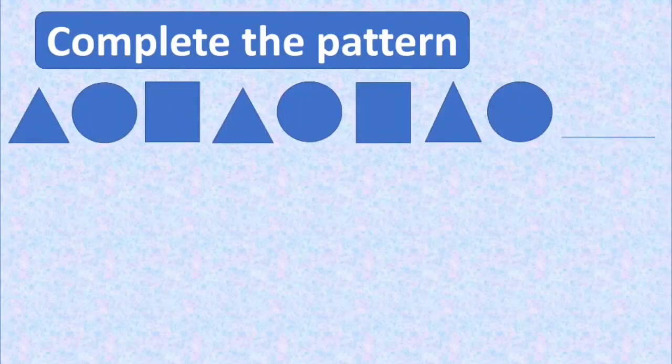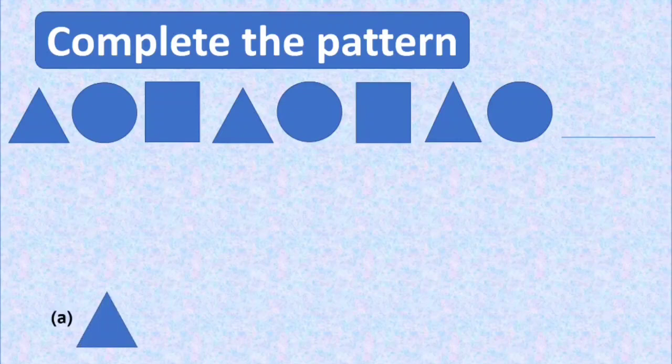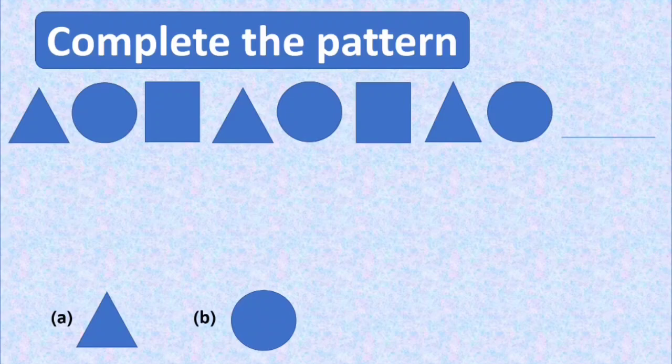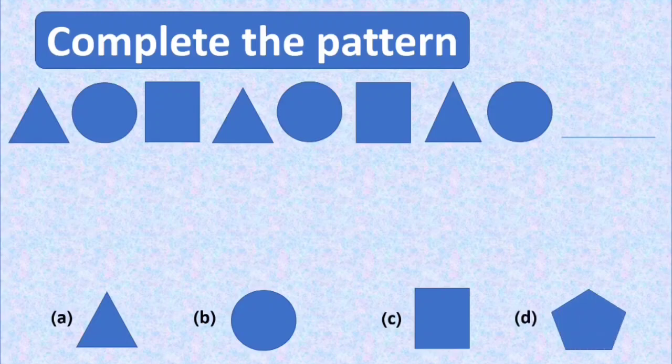Complete the pattern. Here we have some shapes and a blank at the end of the pattern. We have to fill it with a particular shape to complete the pattern. The four options are: option A is a triangle, option B is a circle, option C is a square, and option D is a five-sided figure, a pentagon. We have to choose one correct option.